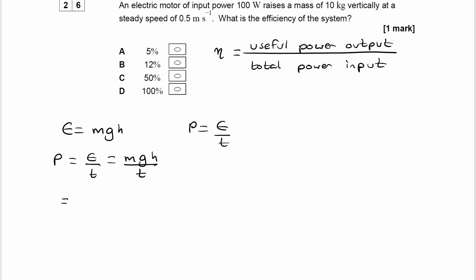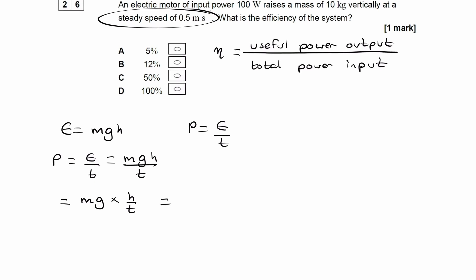And I can rewrite this as mg times h over t. So the height gained divided by time. And the height gained divided by time is just speed. Speed is distance over time. So this is just the same thing as mg times v.